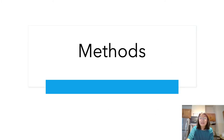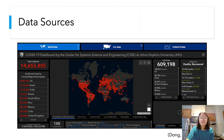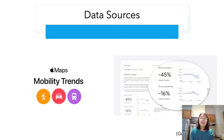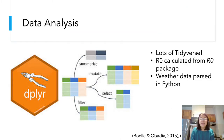Now I'm going to talk about the methods I used to collect and analyze data for this study. The first source of my data is the Johns Hopkins coronavirus tracker. At the time of making this PowerPoint, there were 14.7 million cases. The next step was to get mobility data, which is a proxy for social distancing. I used Apple and Google mobility data to analyze how people were moving around before and during the pandemic. Once the data was aggregated, I analyzed it in R using dplyr from the tidyverse. I calculated R0 from the R0 package, and the weather data was parsed in Python using the ERA5 dataset.